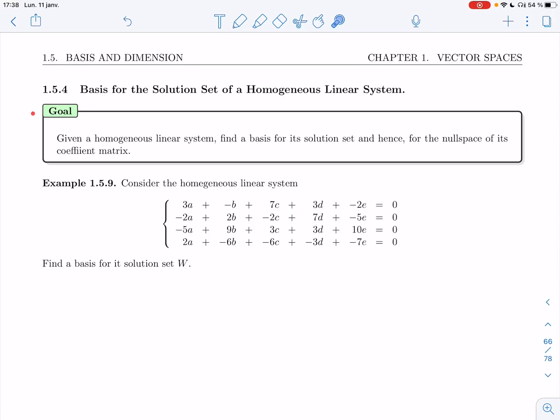Welcome back. In this video, we'll be looking at section 1.5.4, how to find a basis for the solution set of a homogeneous linear system. This was one of the two main ways we had to create subspaces: one was with the span and now with a homogeneous linear system. Our goal is straightforward. Given a homogeneous linear system, find a basis for its solution set and hence for the null space of its coefficient matrix. So this method also tells you how to find a basis for the null space.